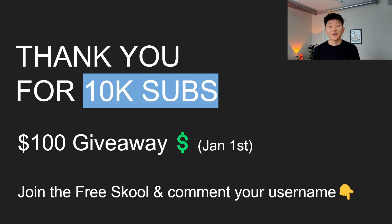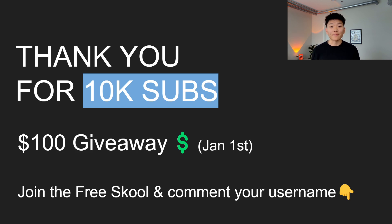Real quick, I just wanted to say thank you guys so much for 10,000 subs. It makes me so happy to see that we were able to hit this milestone within just under three months. Because of this, we're doing a $100 giveaway. The winner will be announced January 1st, and all you have to do to enter is join the FreeSchool community and then comment down below your school username. So let's not waste any time and hop into the key components of AI agents.